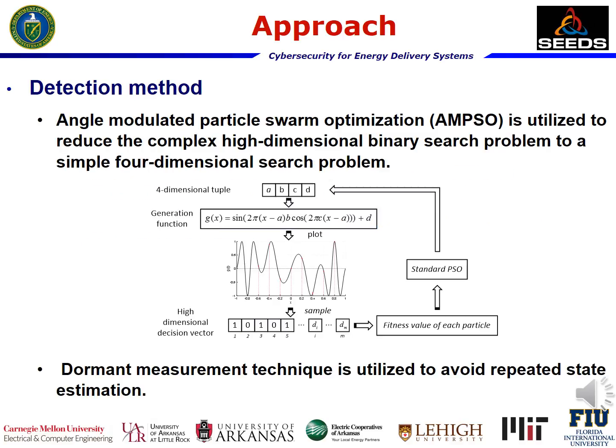To solve the combinatorial search problem, two techniques are utilized. The first technique is angle-modulated particle swarm optimization (AMPSO). It is employed to reduce the complex high-dimensional binary search problem defined in discrete space to a simple four-dimensional search problem defined in continuous space.